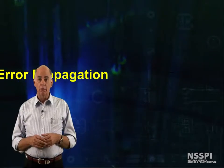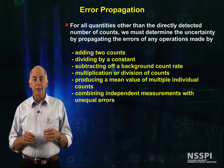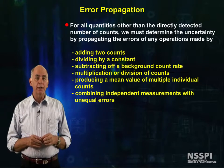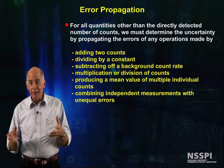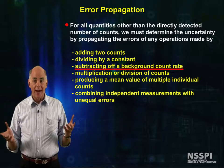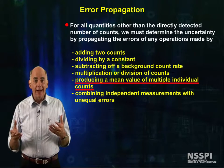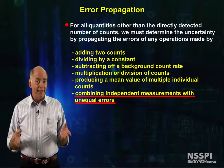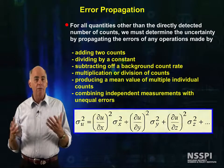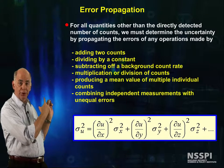Well, what are we going to do? Fear not, help is on the way. For all quantities other than the directly detected number of counts, we can determine the uncertainty by propagating the errors of any of these operations — adding two counts, dividing by a constant, subtracting off a background count rate, multiplication or division of counts, producing a mean value of multiple independent counts, or combining independent measures with unequal errors. To do these mathematical feats, we need to use, ta-da, the error propagation formula shown here.